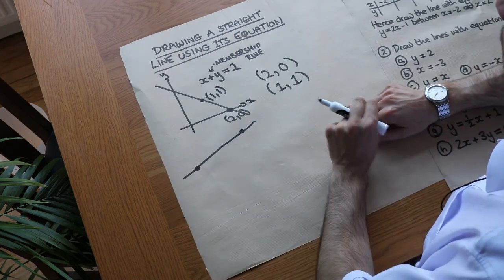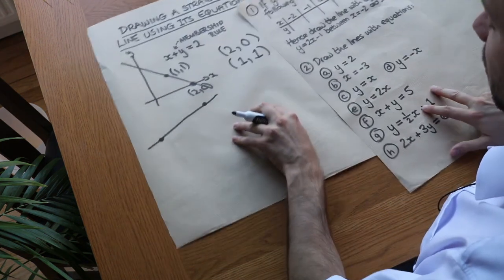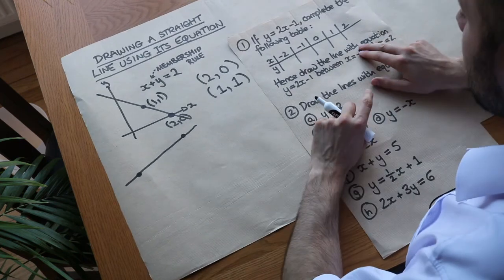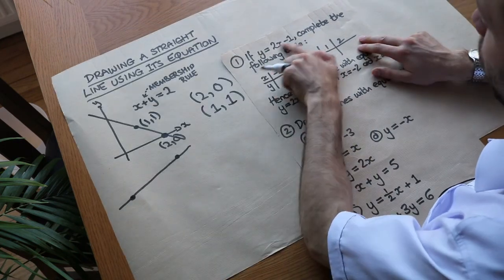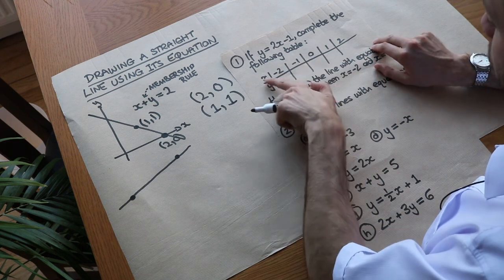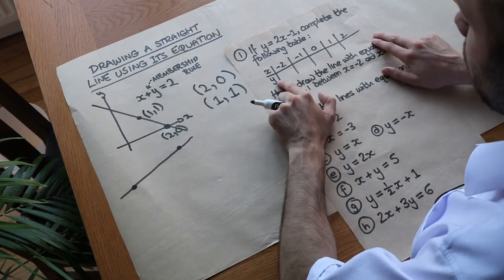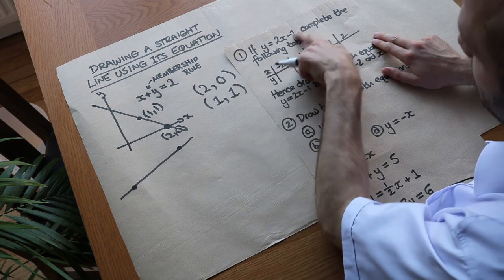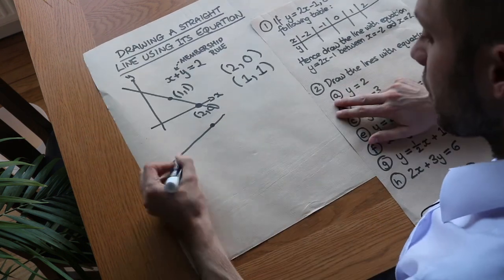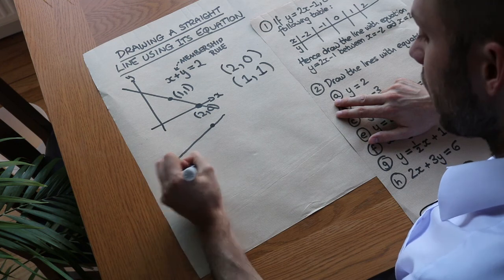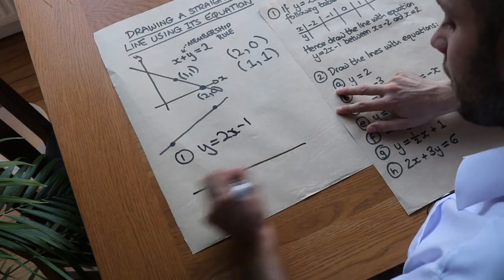We're going to use that principle to answer these questions. What you'll often get in an exam paper is an equation and a table with particular x values, and they want you to work out the y value such that the equation is satisfied for each point. So let's do this first one: y is equal to 2x minus 1, with a table of x values.